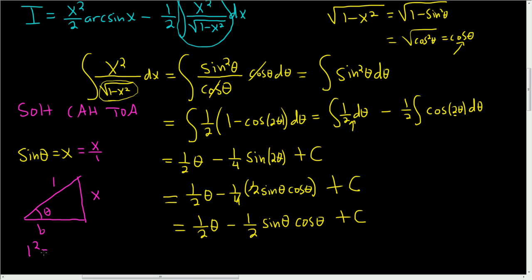Let's call it b. So 1 squared is equal to b squared plus x squared. This implies that if you subtract x squared, take the square root, you get b equals 1 minus x squared. So this is the square root of 1 minus x squared.